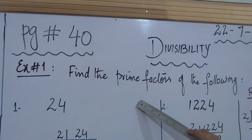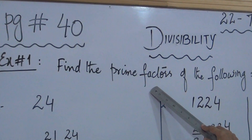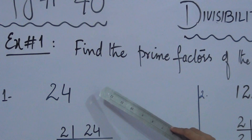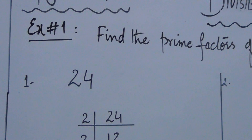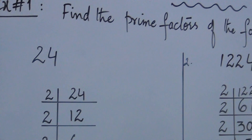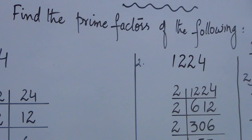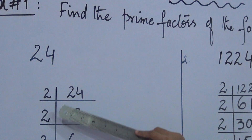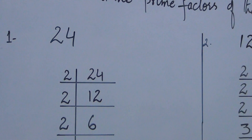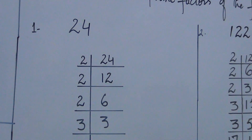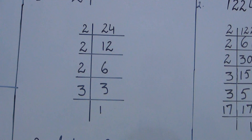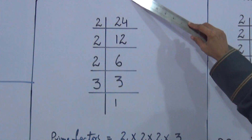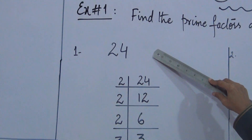We have learnt earlier — what are prime factors? We will divide the given number by prime numbers in such a way that the product of those prime numbers always equals the given number. We divide so that when we multiply the prime numbers we get back the original number.